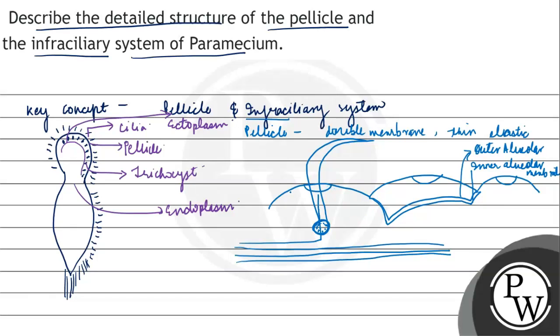jiski help se yahan cilia originate kar paate hain. The origination of cilia is same. After that hamein dekhne ko milta hai ki between these two alveoli we see ki there is an opening of a bottle-shaped cell aur inko hum trichocyst kehte hain, right? Trichocyst ka main function yeh hota hai ki it is an organ of offense and defense, right?